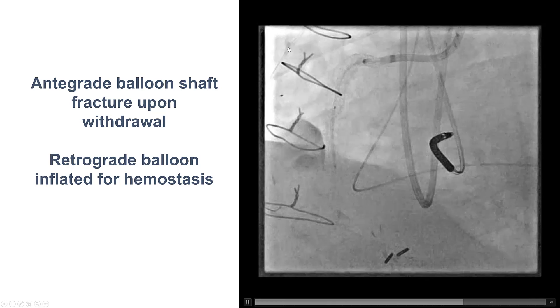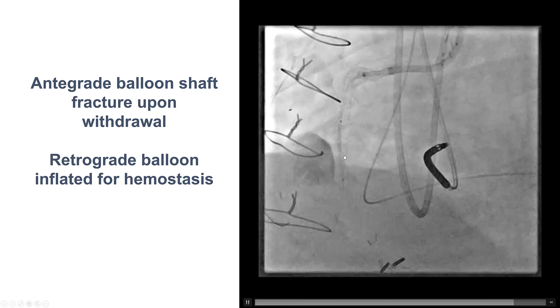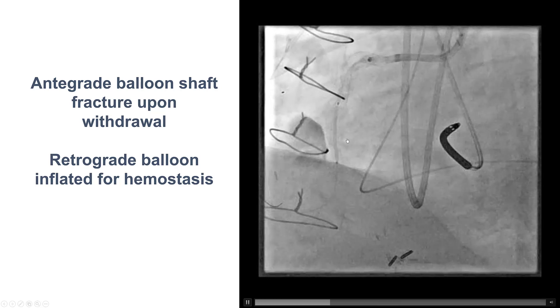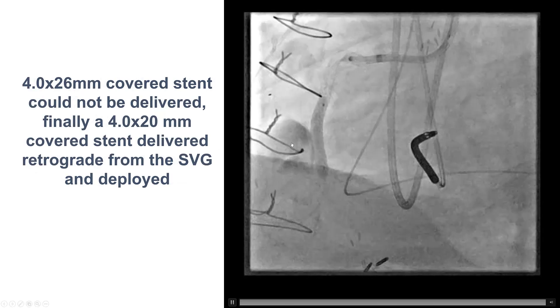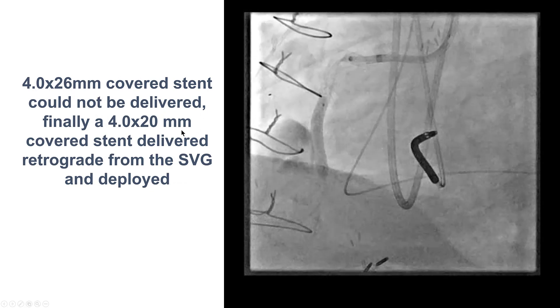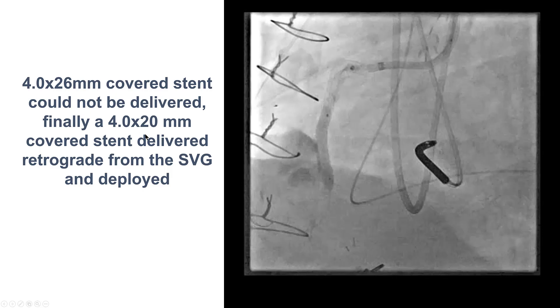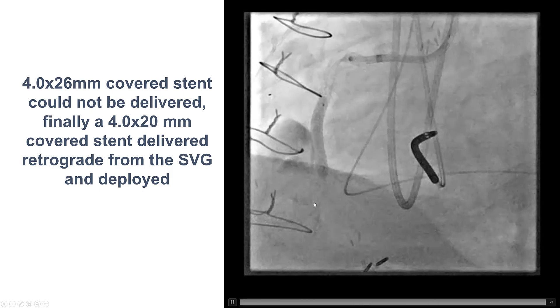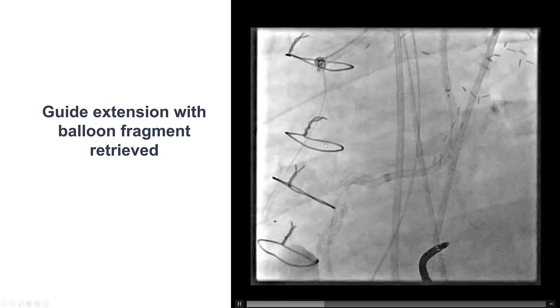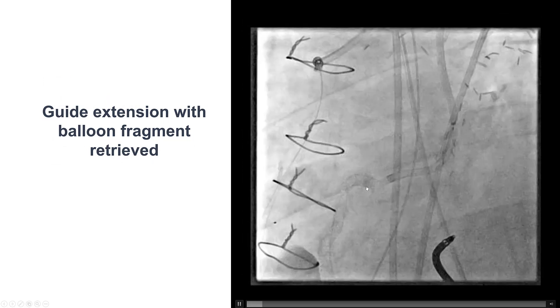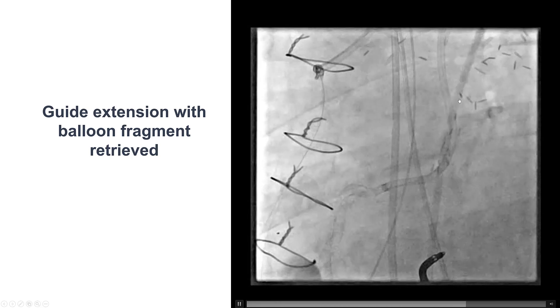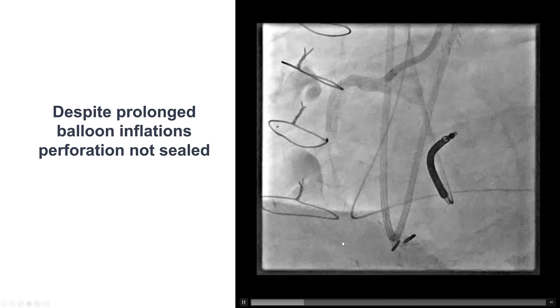But fortunately, here we had retrograde access through a saphenous vein graft, so we were able to use that to insert balloons and then to actually deliver a covered stent. It was a 4x26 Papyrus stent that did not go, but the 4.0 by 20 eventually went and was deployed retrograde into the native right coronary artery. And then, fortunately, we were able to retrieve the fragment of the balloon from the proximal right coronary artery by using a guide extension and withdrawing everything back.